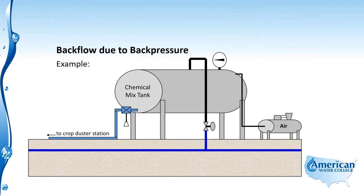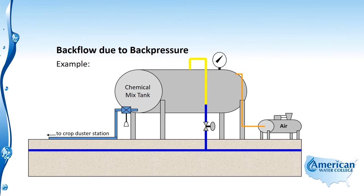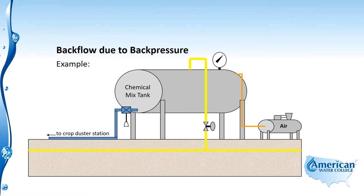Let's take a look at some backflow due to back pressure. Here we have a chemical mix tank — this would represent our agricultural chemical mix tank, and you can see that it provides chemical to crop dusters. This tank is pressurized with an air compressor and it takes water from the potable water system and goes directly into the tank. So when we open this valve, we have cross-connected the systems and the water flows into the tank. We then shut the valve and the air compressor kicks on and the tank is pressurized. As the tank pressure increases to a pressure greater than system pressure, any leak through that valve will allow flow of that chemical into the potable water system.